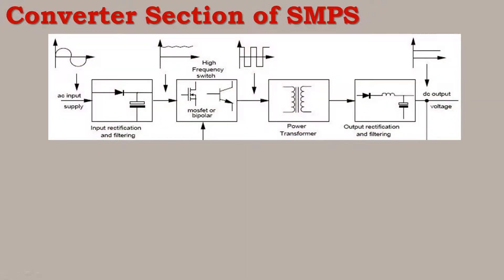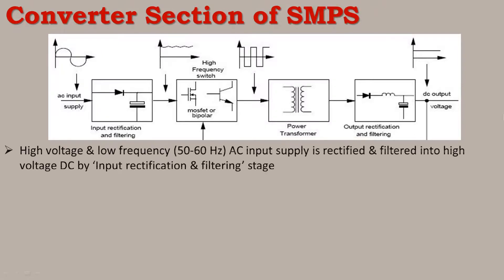Let's look at the converter section. There is a rectification and filter stage, a high-speed switching circuit, a power transformer, and an output rectification and filtering circuit. The high-voltage, low-frequency — i.e., 50 to 60 Hz — AC input is rectified and filtered into high-voltage DC by the input rectification and filtering stage.